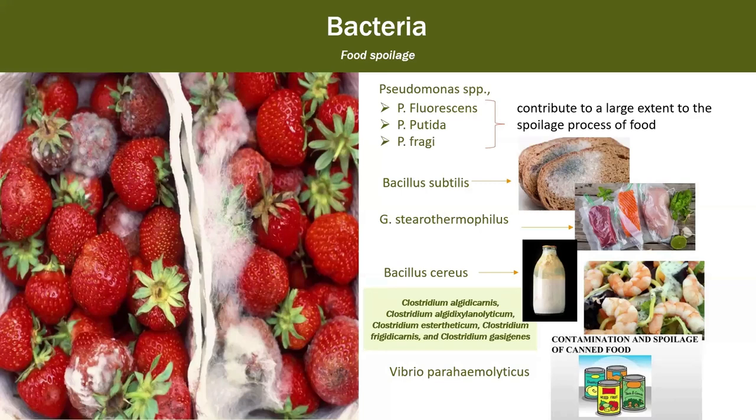Some species can be psychrotrophic, which can spoil refrigerated dairy products. Others, such as Bacillus subtilis, are mesophilic and can spoil bakery products, whereas others such as Geobacillus sp. are thermophilic and spoil foods that are canned or in hermetically sealed packages.